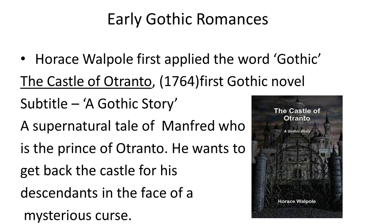Looking at early gothic romances, the writer who heralded this gothic movement was Horace Walpole, and it began with his work The Castle of Otranto, which is the first gothic novel and has the subtitle 'A Gothic Story.' This gothic romance talks about Manfred, who is a prince of Otranto, and he wants to get back the castle for his descendants in the face of a mysterious curse. On the front page a castle is shown.